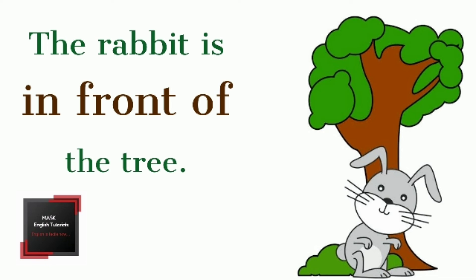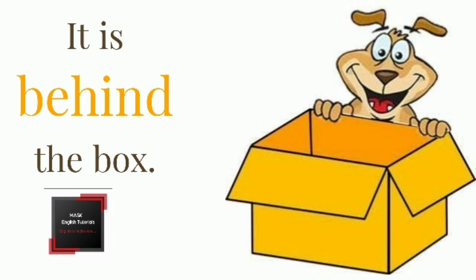Ninth, 'in front of' means a position just ahead of someone or something. Example: the rabbit is in front of the tree. Tenth, 'behind' means a position just at the back of someone or something. Example: it is behind the box.